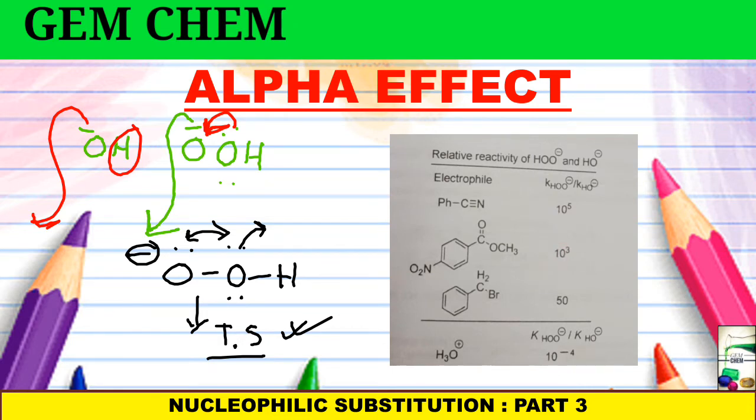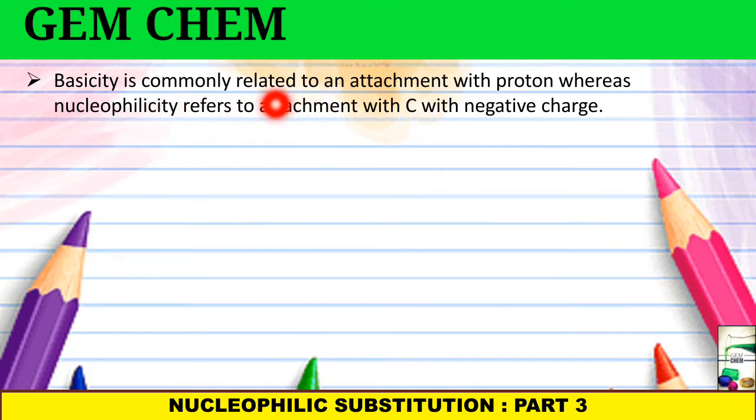Now we will focus on the last factor: basicity is commonly related to the attachment with proton whereas nucleophilicity refers to the attachment with carbon having negative charge, suppose for saturated halides. And why this is so? Because basicity always supports a hard acid whereas nucleophilicity supports a soft acid. So when you are talking about nucleophile, nucleophile will try to attack a soft target and the nucleophile will itself be a soft one. What is soft? What is hard? Soft means that the electron density will be dispersed throughout the atom whereas in case of hard there will be all the electron density towards itself.